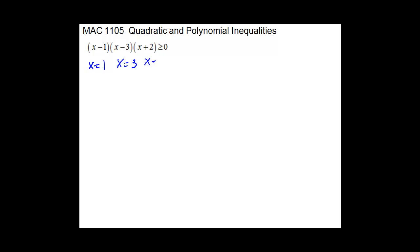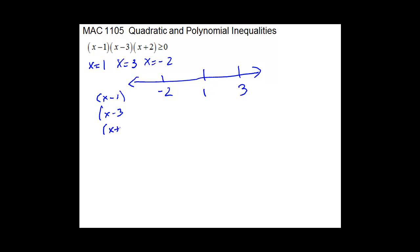Let's look at one more. This one is already factored and in proper form — the function is greater than 0. We can read off the boundary points: x equals 1, x equals 3, and x equals negative 2. Make sure you go in numerical order on the number line: negative 2, 1, and 3. We look at the factors (x minus 1), (x minus 3), (x plus 2), and their product. Test values are negative 3, 0, 2, and 4.